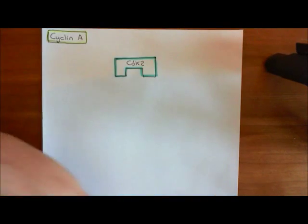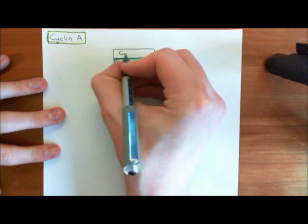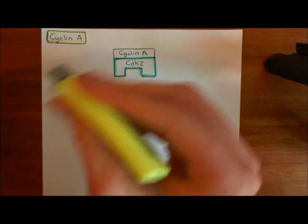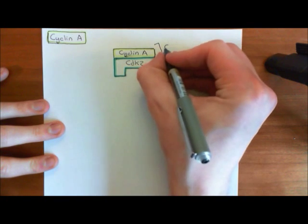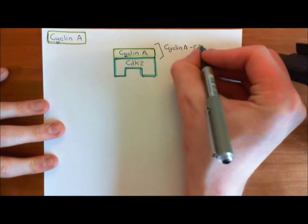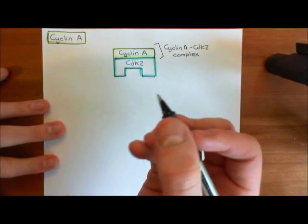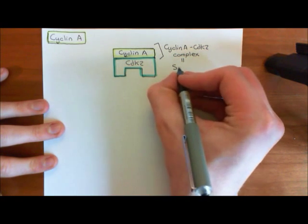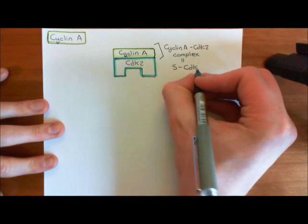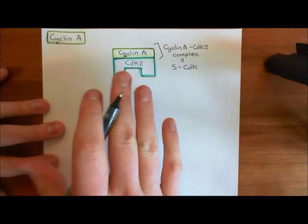Cyclin A is going to bind to CDK2, and with this different cyclin attached, it will have a different activity profile. This cyclin A-CDK2 complex will do different things compared to what the cyclin E-CDK2 complexes did. Just as the cyclin D-CDK4 complexes were called G1 CDKs and the cyclin E-CDK2 complexes were called G1S CDKs, the cyclin A-CDK2 complex is the main CDK complex of S phase, so it is called the S CDK. It is very important for continuing replication and for making sure chromosomes are not copied more than once.